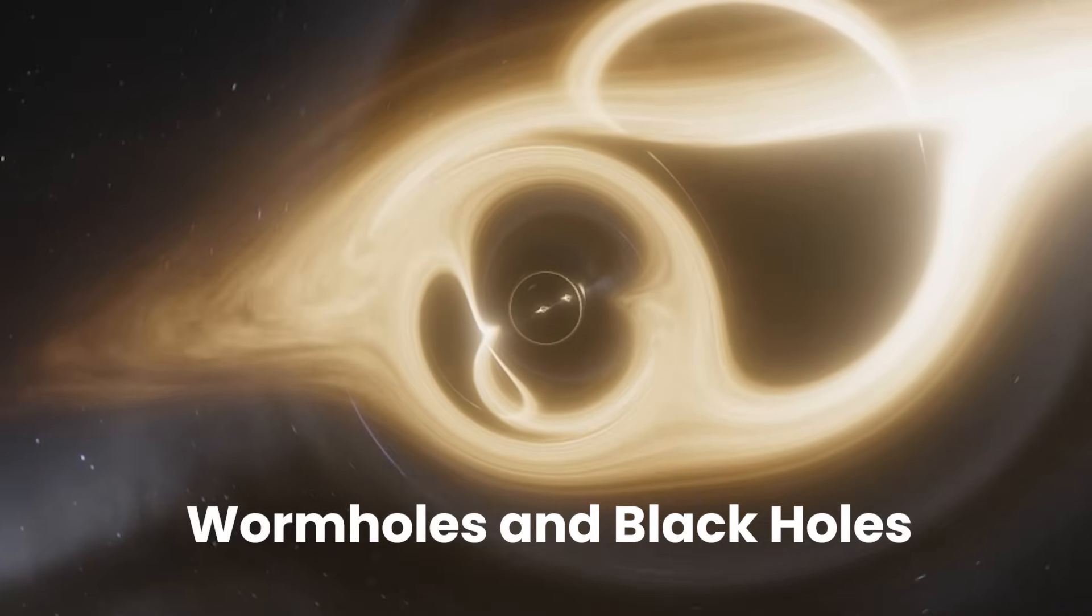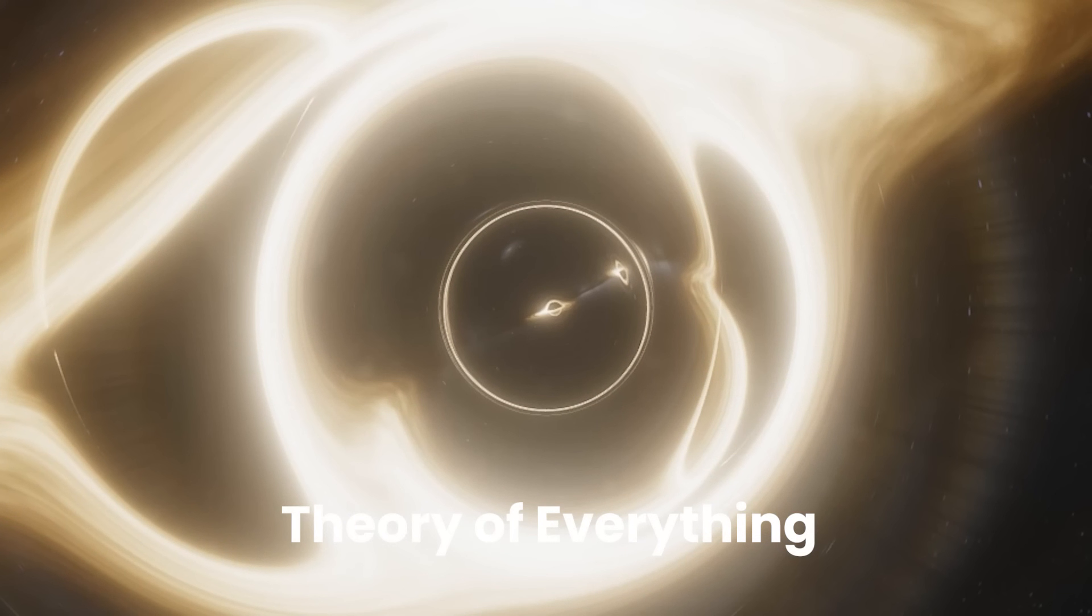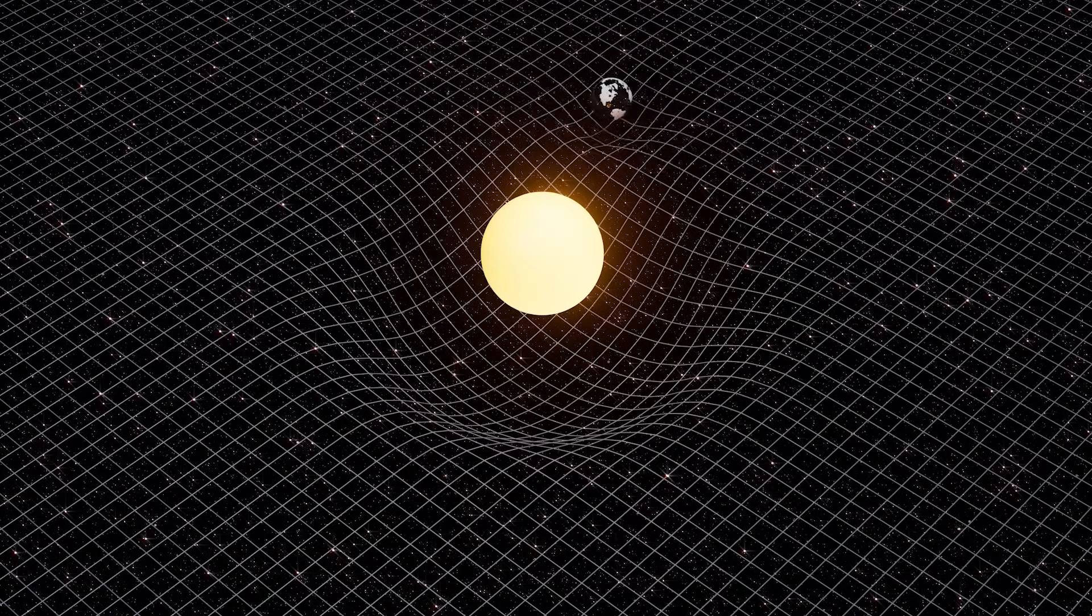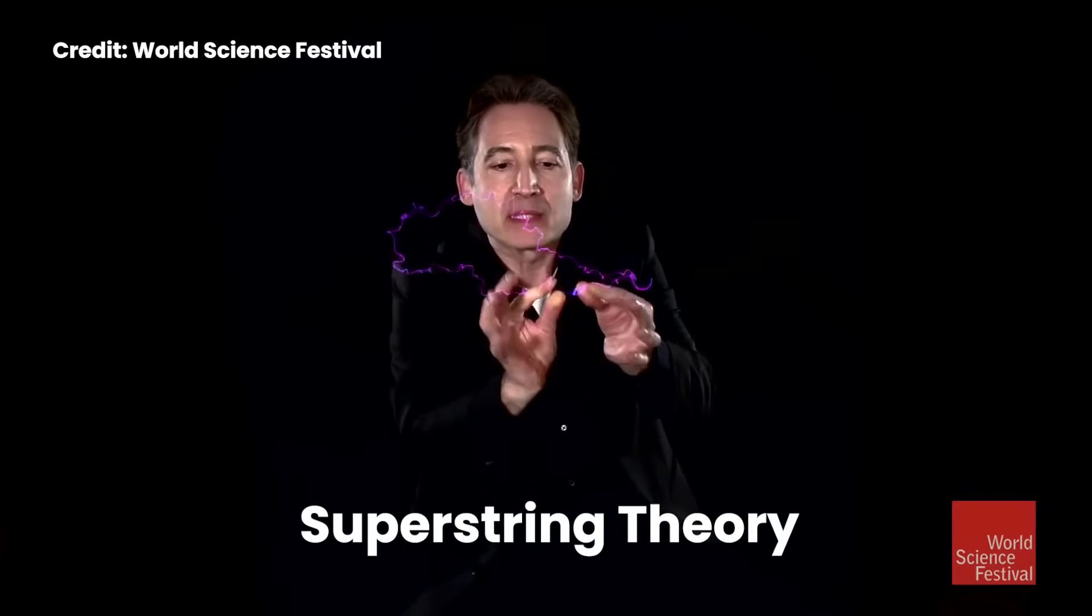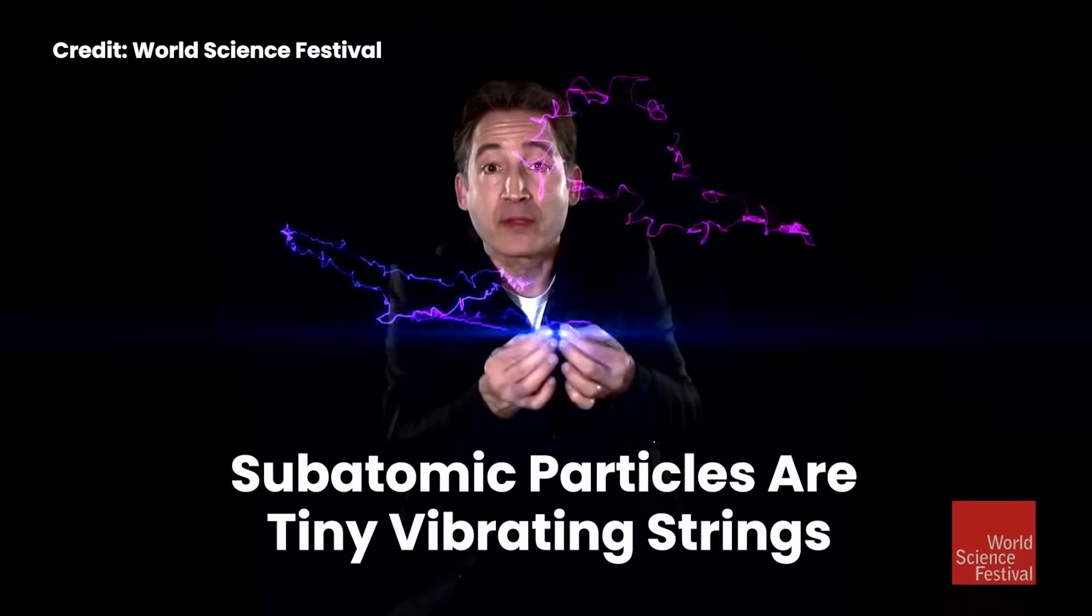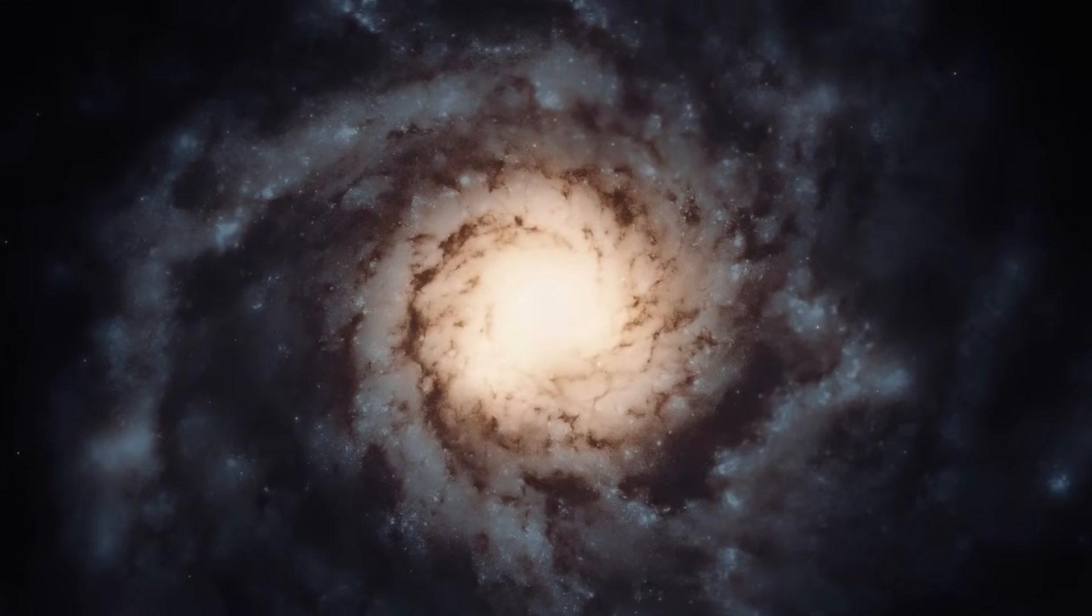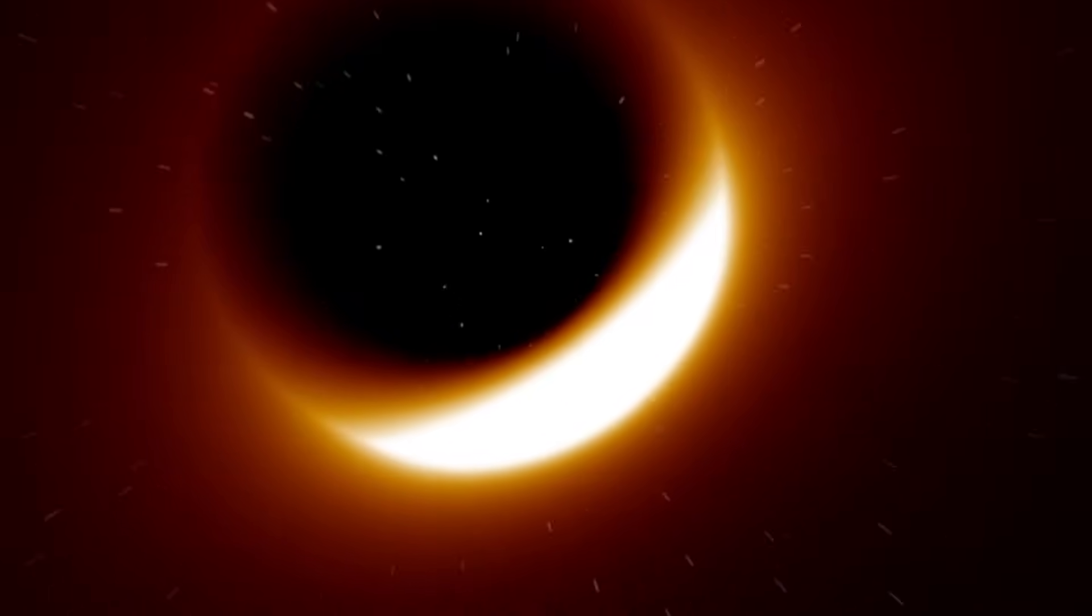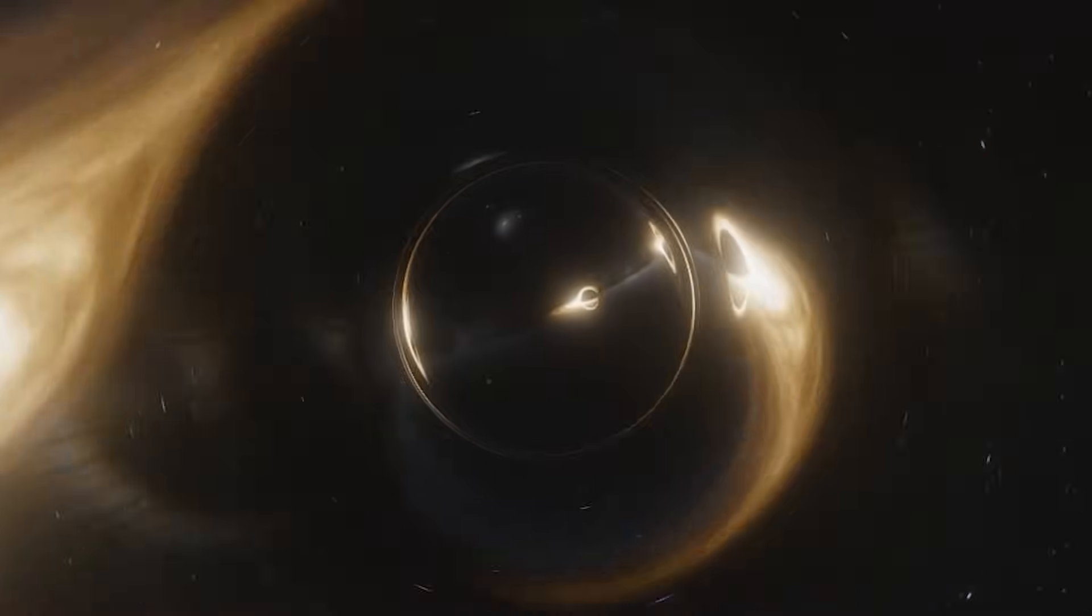This quest for a unified theory, often referred to as the theory of everything, aims to reconcile Einstein's theory of gravity with quantum theory. One promising candidate in this endeavor is superstring theory, which posits that subatomic particles are tiny vibrating strings, orchestrating the universe's symphony of existence. In this theory, the vibrations of these strings in ten dimensions of space-time produce phenomena like black holes and wormholes, providing a comprehensive explanation for observed cosmic mysteries.